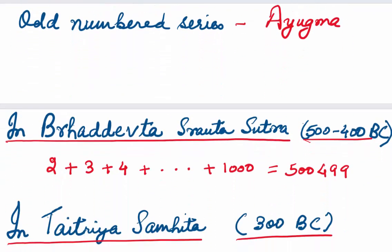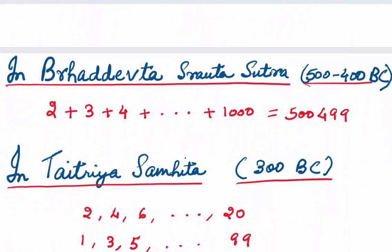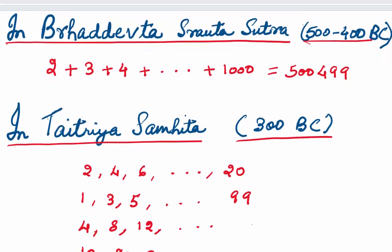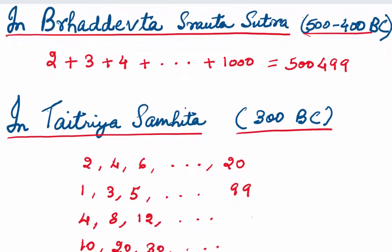When we come to Vrahadevata Shrata Sutra, which dates back to 500 to 400 BC, you can see an example where the sum of an arithmetic series 2, 3, 4, going up to 1000, is accurately given as 500499.